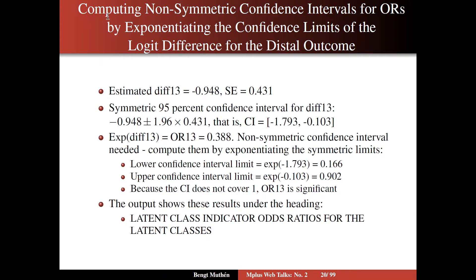We want to have the non-symmetric confidence intervals by exponentiating the confidence limits of the logit difference for the distal outcome. The estimated difference, which is the logit difference, is minus 0.948 with this standard error. A symmetric 95% confidence interval for this logit difference is therefore minus 0.948 plus minus 1.96 times the standard error. So you get the confidence interval like this, which is for the logit difference. To get to the odds ratio confidence interval, the estimate is the exponentiated value of the logit difference.